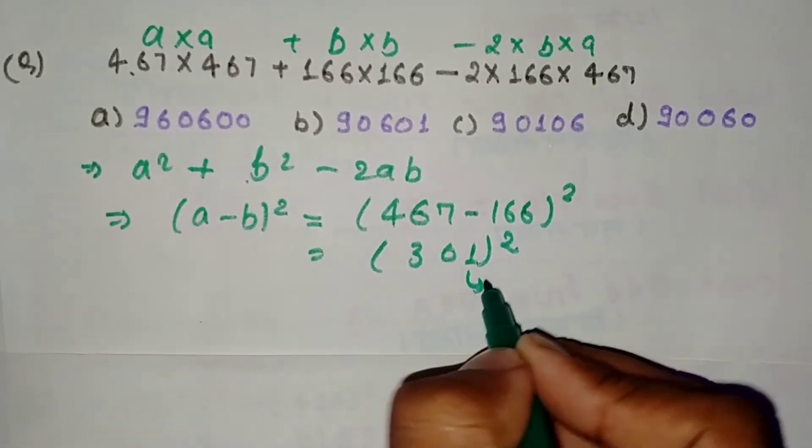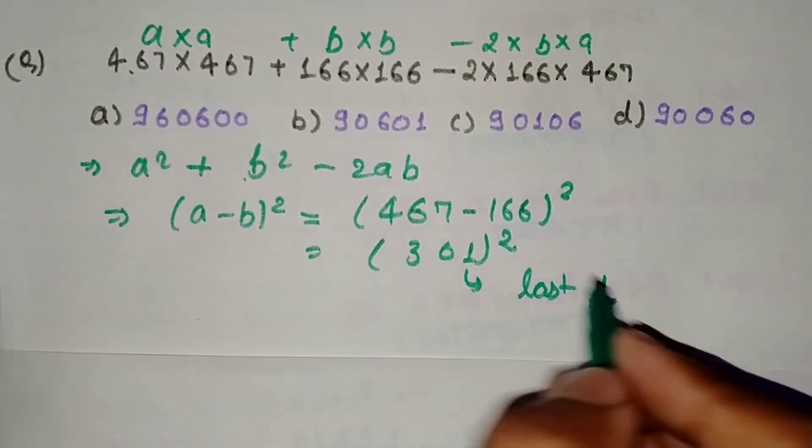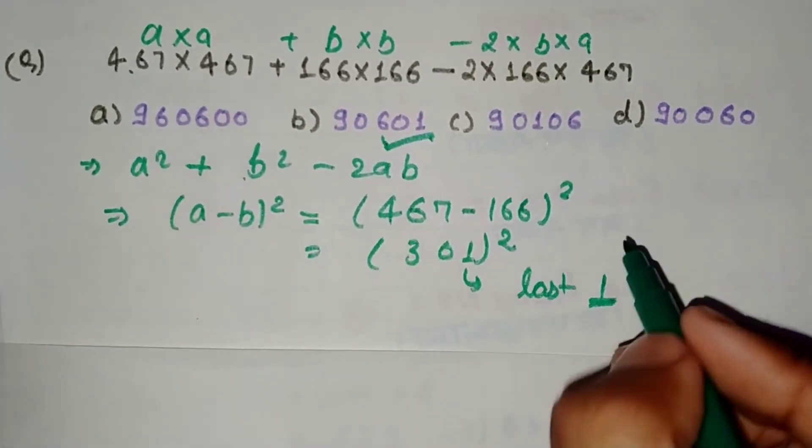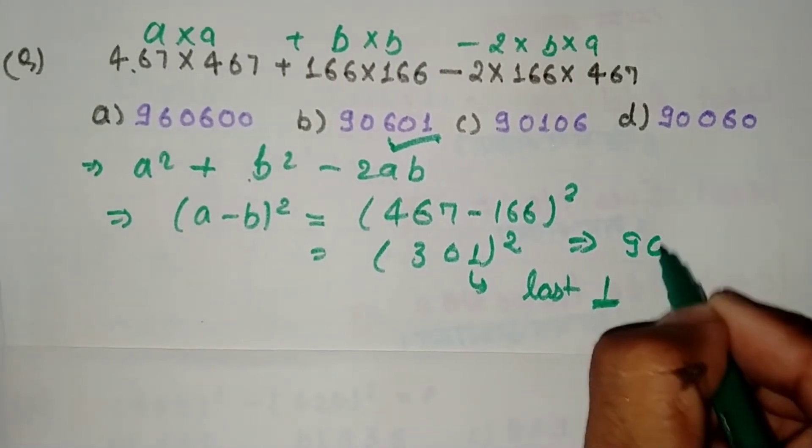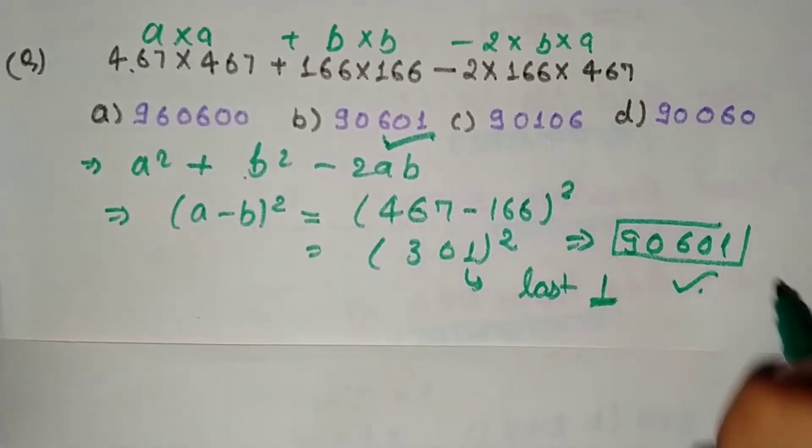Now, the last digit will be 1. So the square will give us 90601 as the answer.